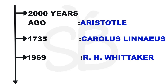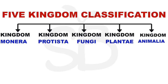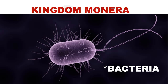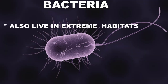This is the five kingdom classification. The kingdoms are: Monera, Protista, Fungi, Plantae, and Animalia. Kingdom Monera — the members of this kingdom are bacteria. These are micro-organisms that can survive in extreme conditions.